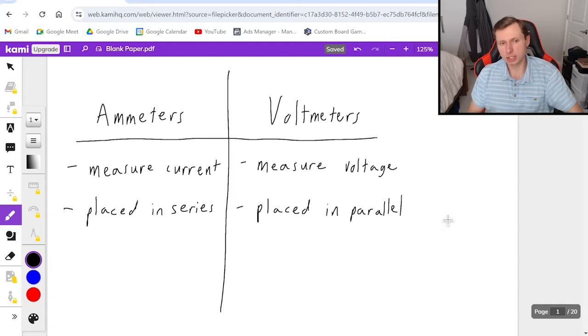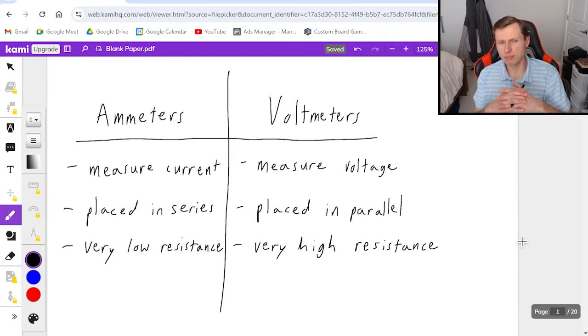And the reason why is because of this third point: ammeters have a very low resistance and voltmeters have a very high resistance. If you're wondering why that makes it good that ammeters are in series if it's very low resistance and voltmeters are good for parallel because it's very high resistance, just think about it, think about Ohm's law. And if you're still confused comment below and I'll answer your questions.